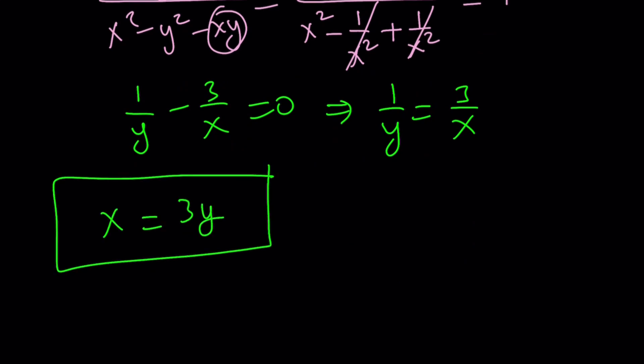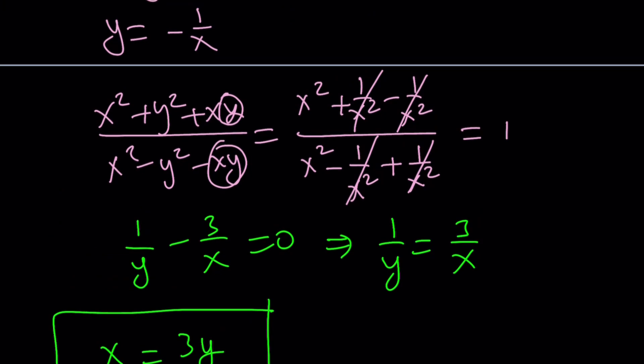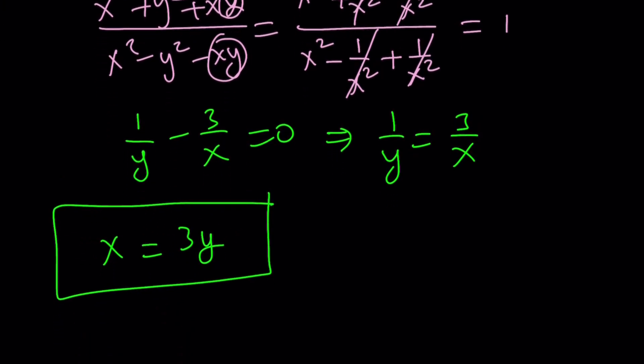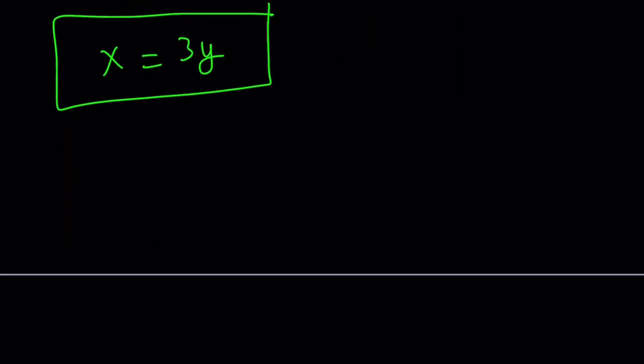That was the whole purpose, actually, to turn this into a ratio problem. So the original expression gave us two things. One of them is y equals negative 1 over x, in which case our expression is going to equal 1, or x equals 3y. And let's see what this takes us to.